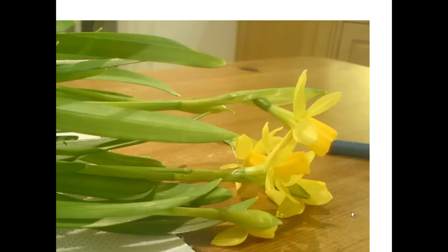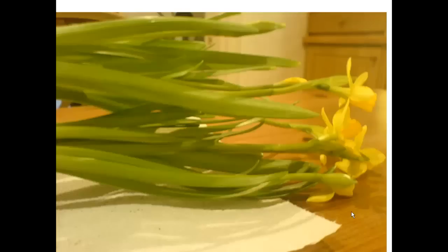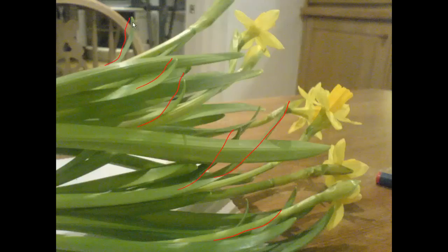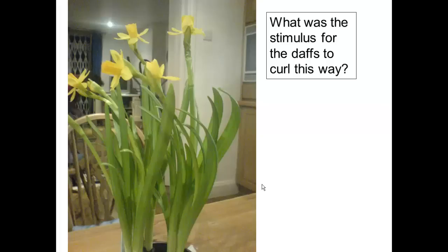You can kind of see it happening here, and then a few minutes later in this fuzzy, out-of-focus camera phone photo you can see it happening a little bit more. Can you see the tips of these daffodil leaves starting to curve upwards? Here, look — these are all curving upwards, and a few minutes later they're bending away, until I righted them again and took this photograph. So the question is: what was the stimulus for the daffs to curl this way? That's something to think about as we go through the video.